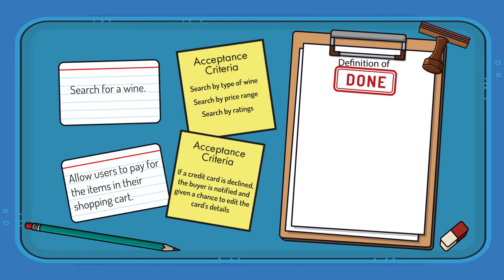Notice that these acceptance criteria are very specific to each product backlog item. Searching by price is an acceptance criterion for the search for wine backlog item, but searching by price doesn't make any sense as acceptance criteria for paying for items in a cart. Contrast that with a team's definition of done. A team's definition of done should contain things that apply to all, or perhaps nearly all, of its product backlog items.